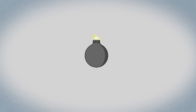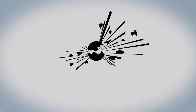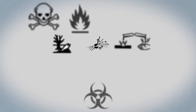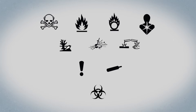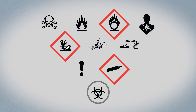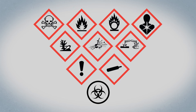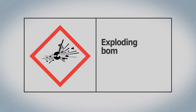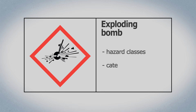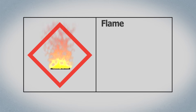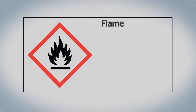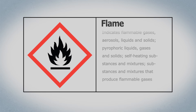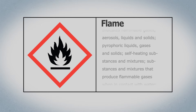WHMIS 2015 includes pictograms that show the type of hazard present. All pictograms except one have a red diamond-shaped border. The name of the pictogram describes the overall hazard, and most pictograms have a number of hazard classes and categories. For example, the flame pictogram is used for flammable gases, aerosols, liquids, and solids.